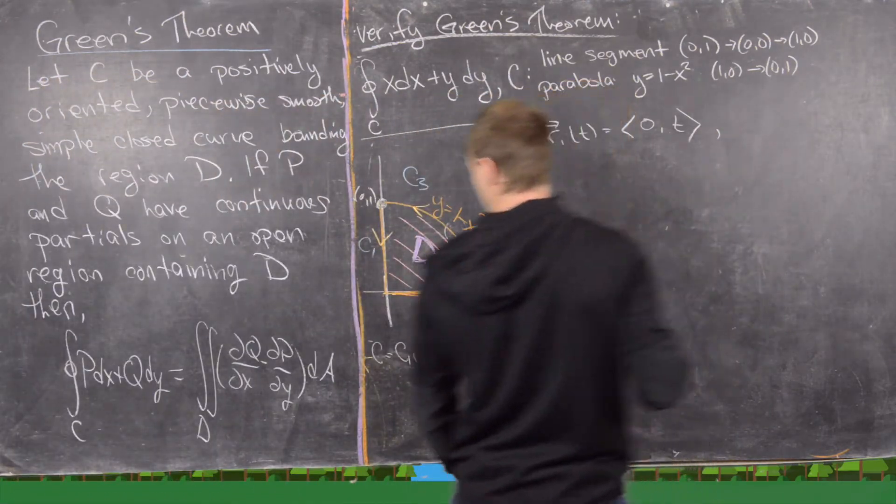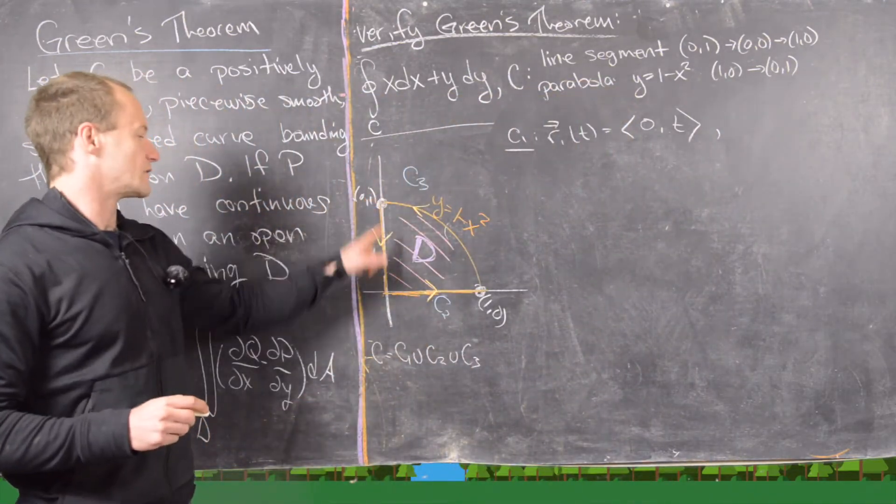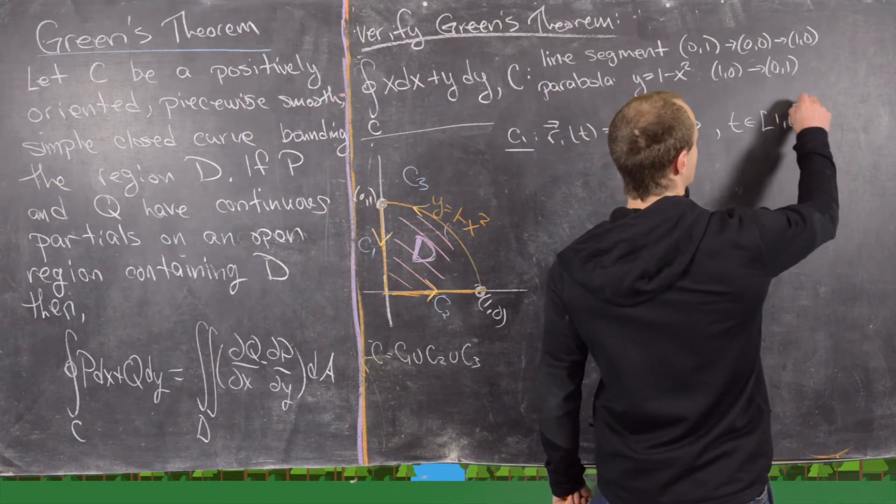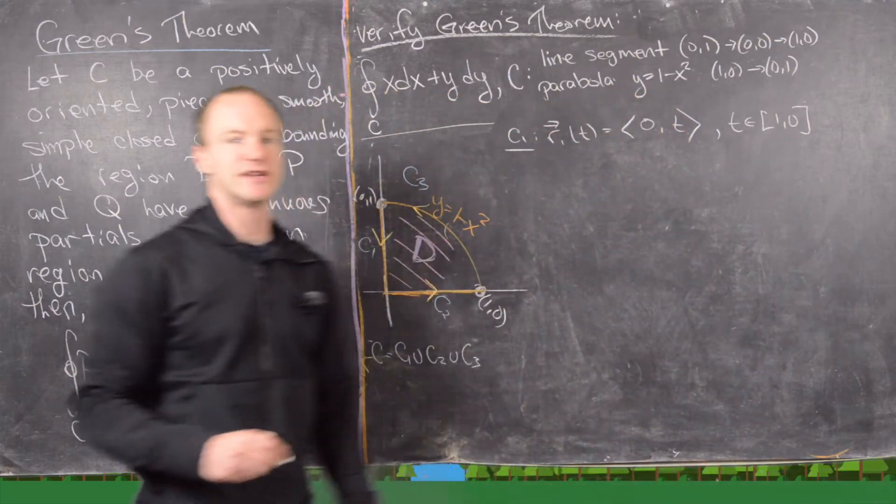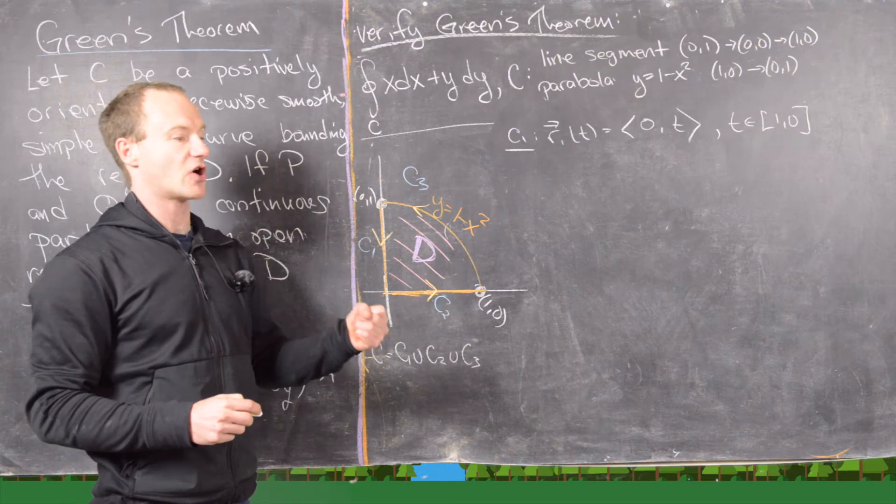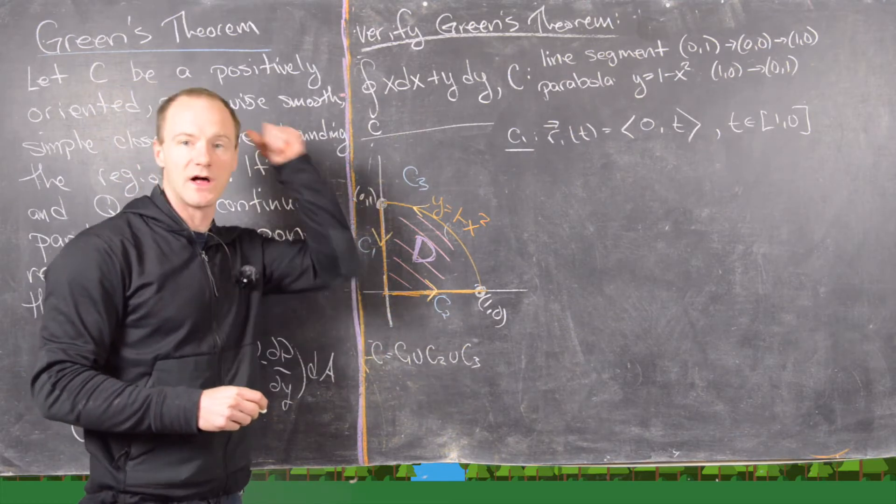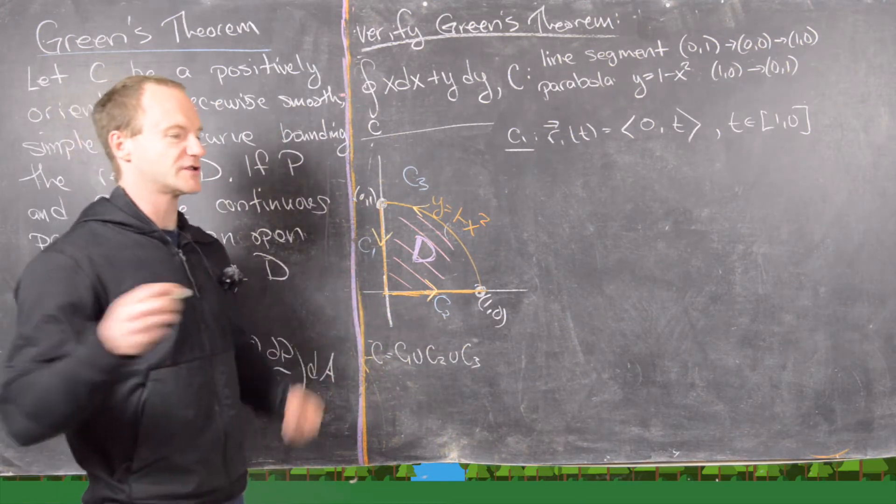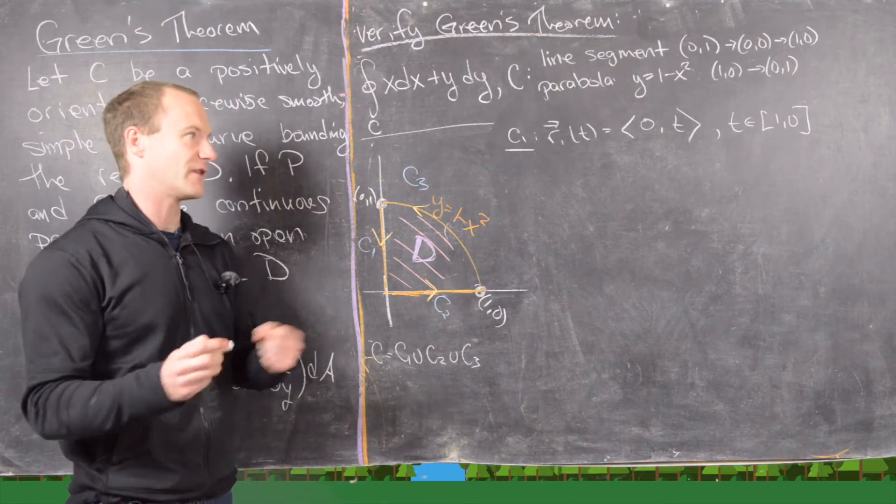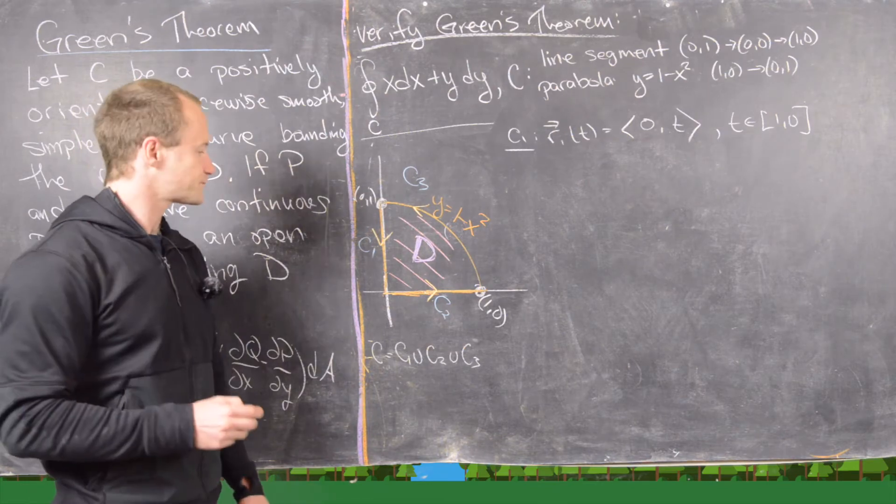So we can let the y value be T. And then, in order to make it go from y equals 1 to y equals 0, we can say T is in the interval 1 to 0. So we're abusing notation a little bit, but the takeaway here is we're starting at time T equals 1, and we're ending at time T equals 0. You can also reparametrize this so it's going forward in time, but I think this is a fine way to do it.